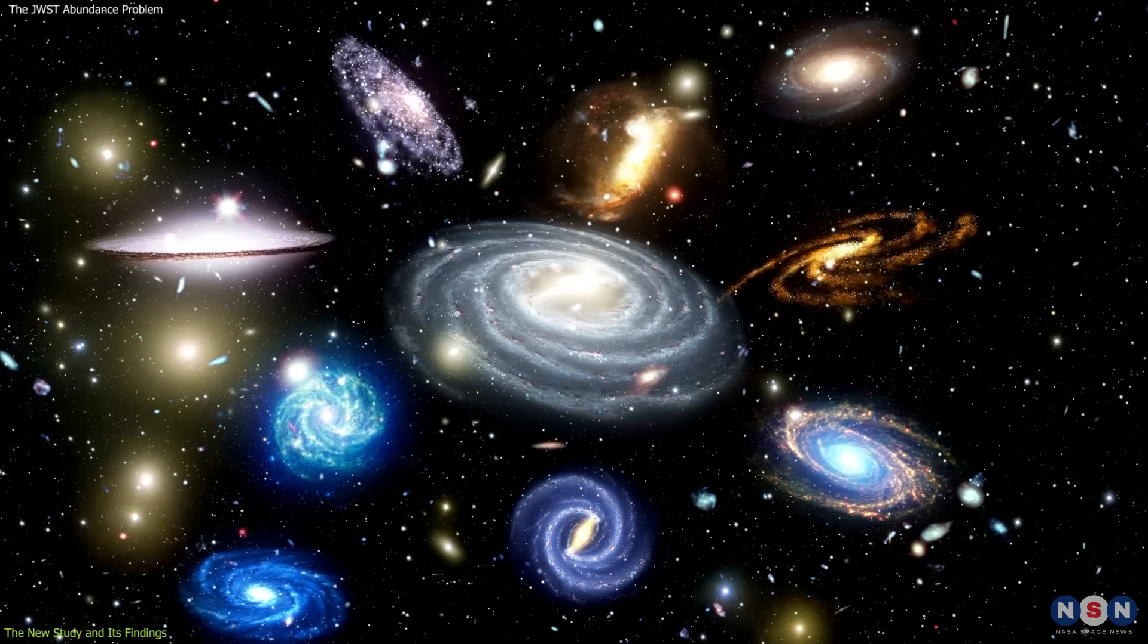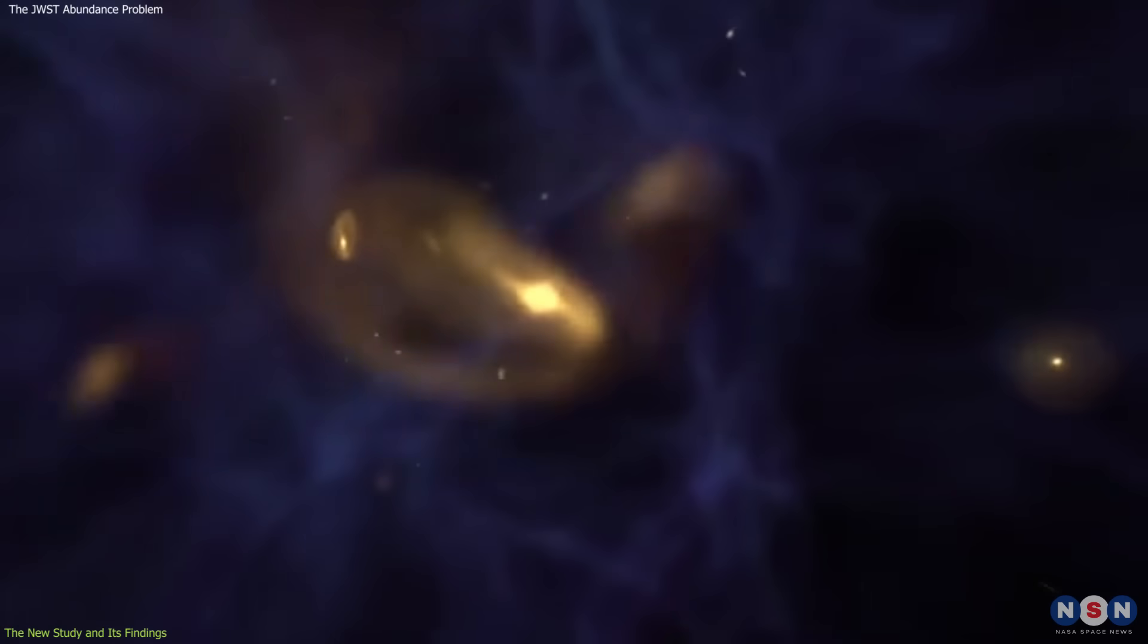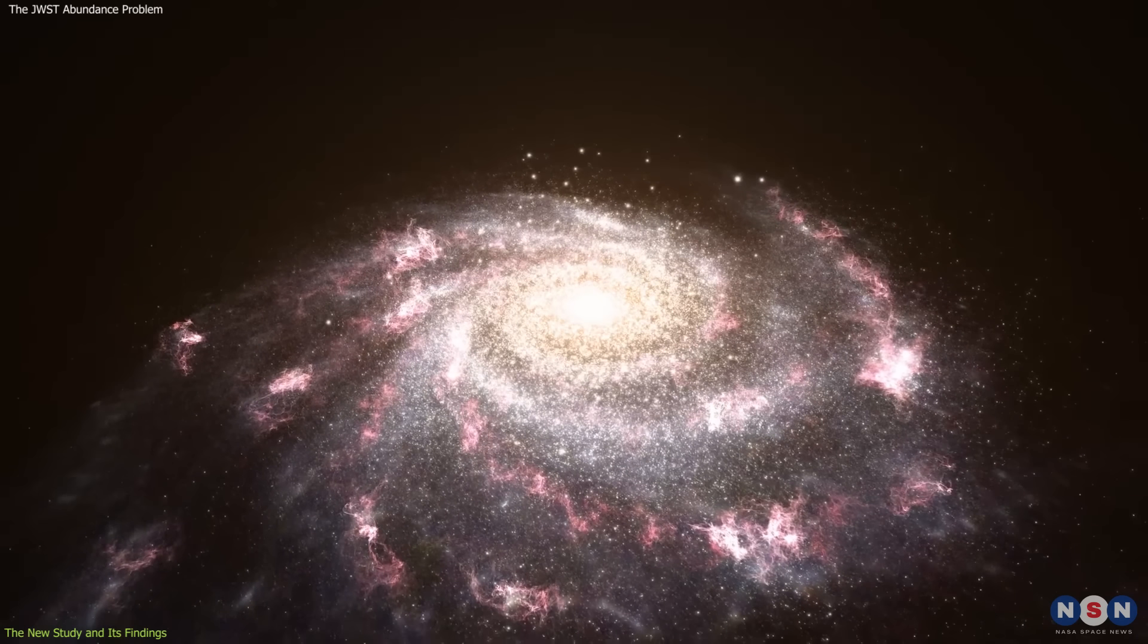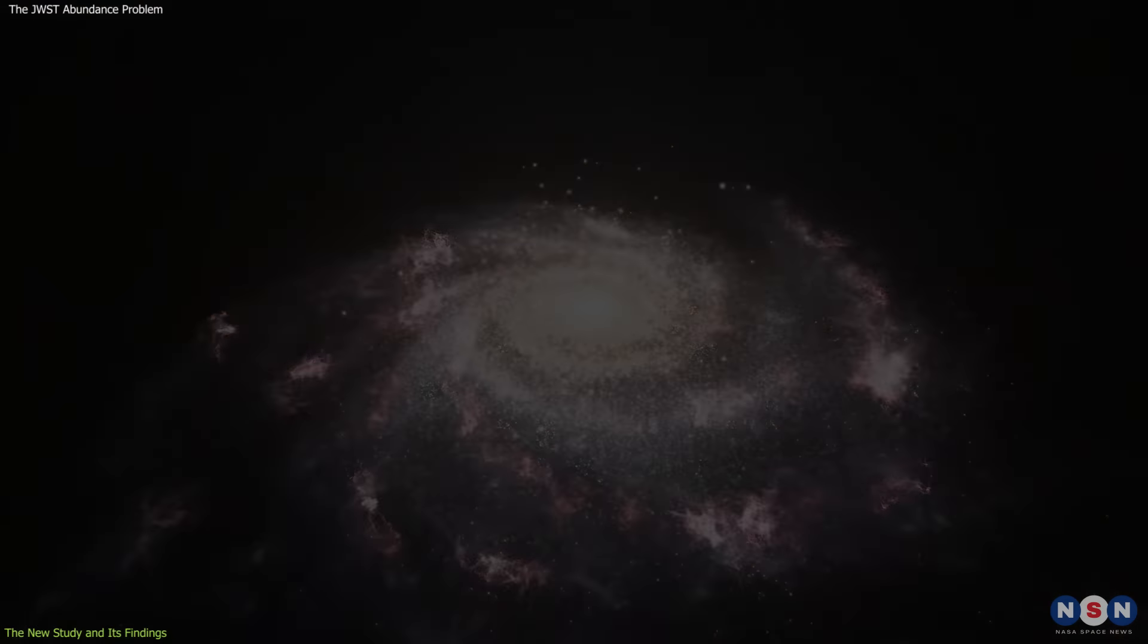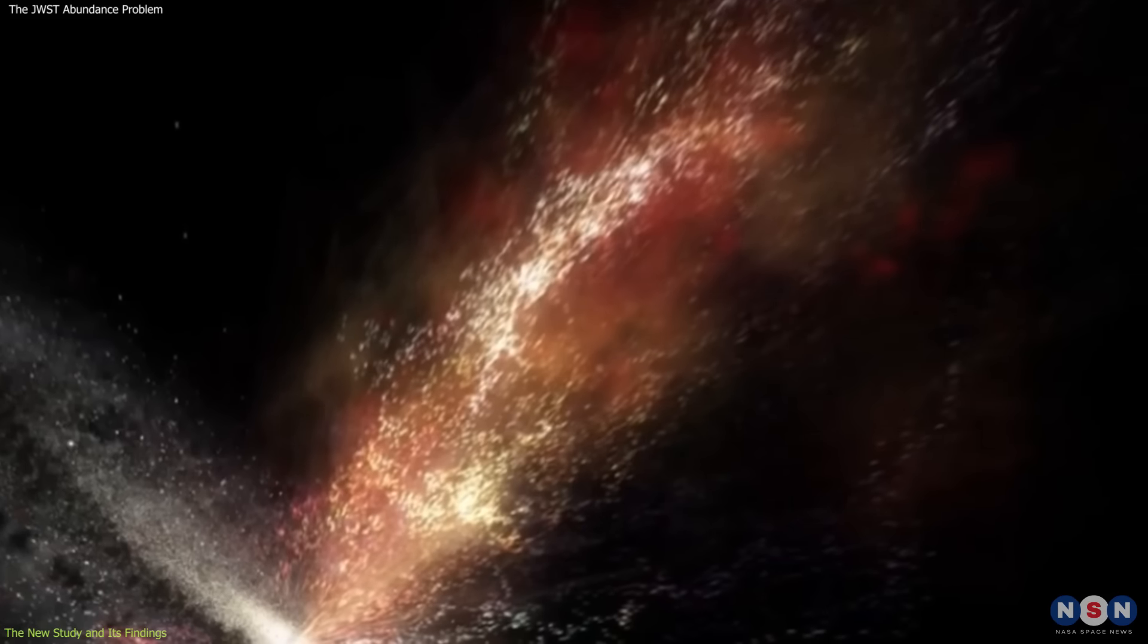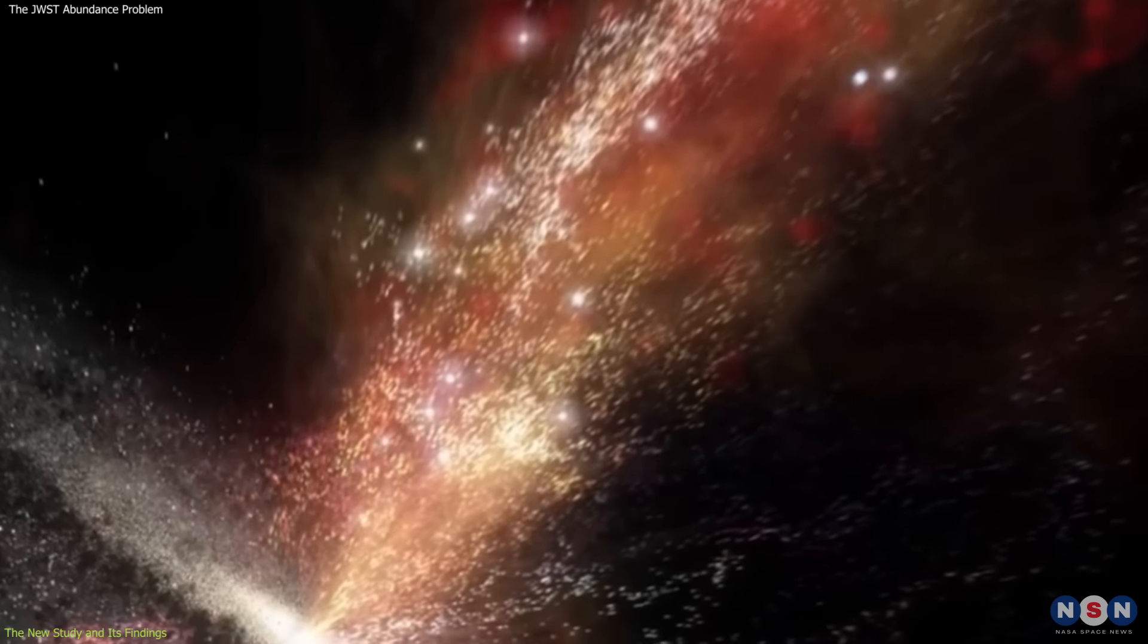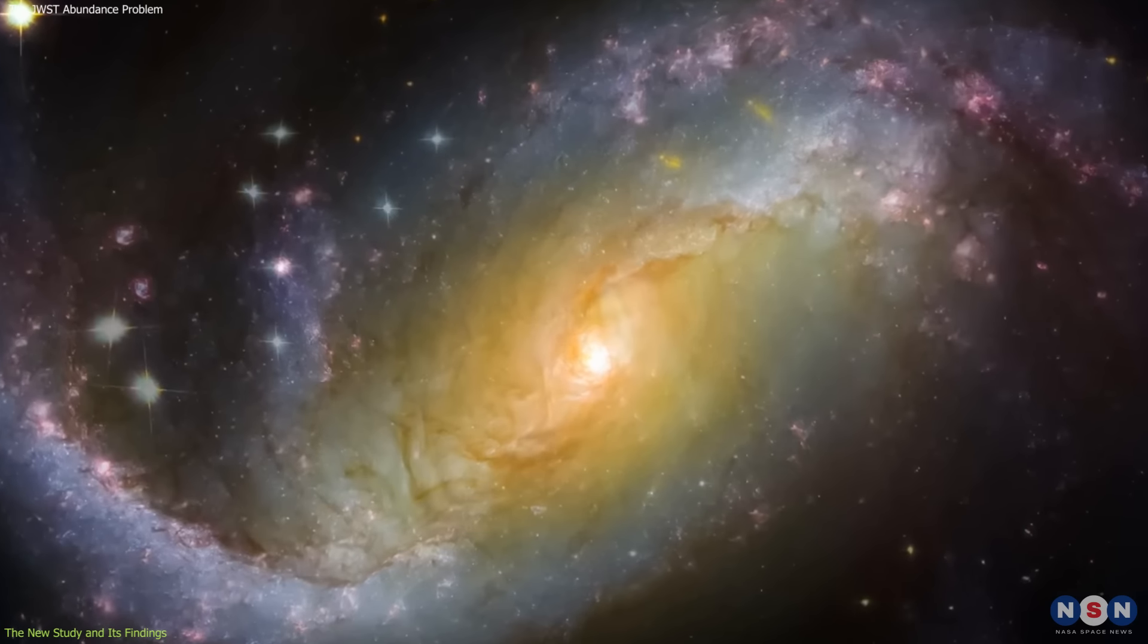Another possibility is that there are some unknown processes of galaxy formation and evolution that can produce the ultramassive galaxies in the early universe, without violating the standard cosmological model. These processes could involve some feedback mechanisms that regulate the star formation and the gas accretion in the galaxies.